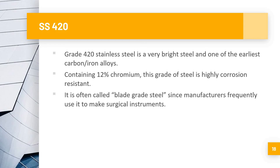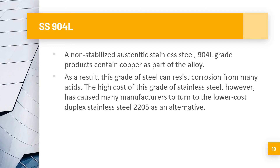Moving on to the 904L series — this is a non-stabilized austenitic stainless steel. Grade 904L contains copper as part of the alloy, which allows this grade to resist corrosion from many acids. The high cost of this grade leads many manufacturers to turn to lower-cost alternatives. Sometimes manufacturers use it as an alternative to duplex stainless steel grade 2205.